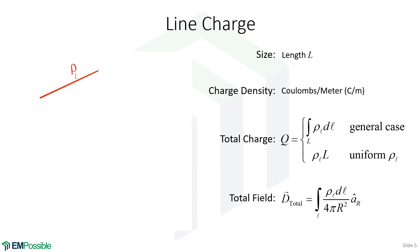When the charge density is constant or uniform over the whole length, the total charge becomes very simple. It's just the charge density times the total length ρ_L times L.